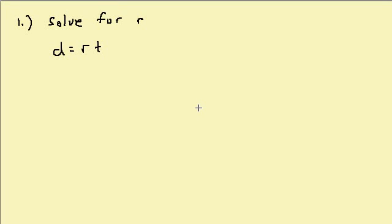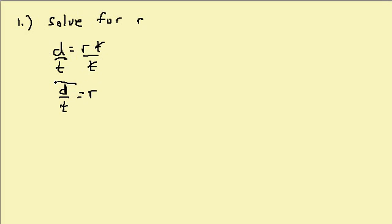Let's look at solving formulas for a specified variable. Here we want to solve D equals RT for R. We need R on one side by itself. I'm going to divide by T because it's R times T — that cancels the T's. Divide both sides by T, so I get R equals D over T. And there's your answer.